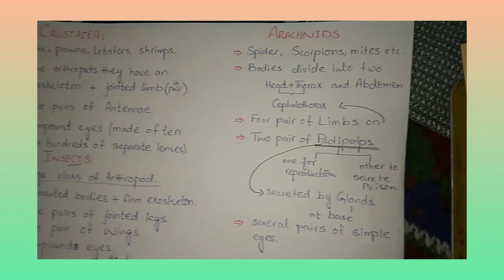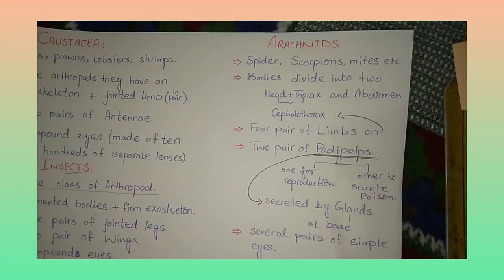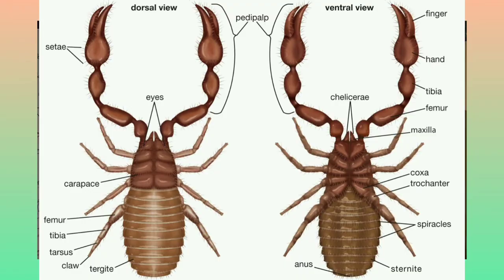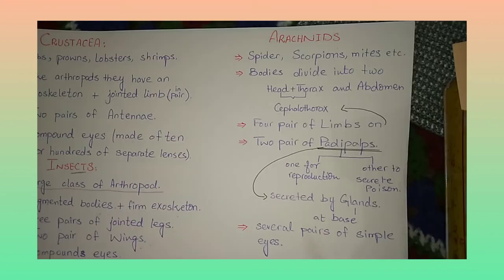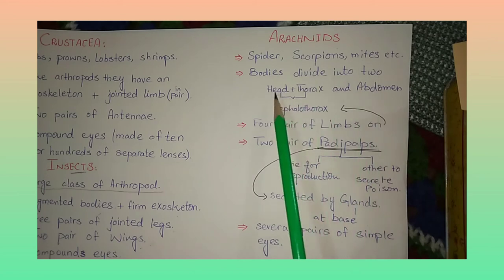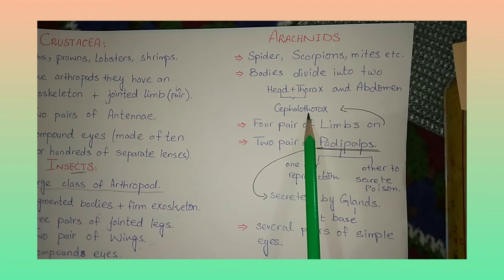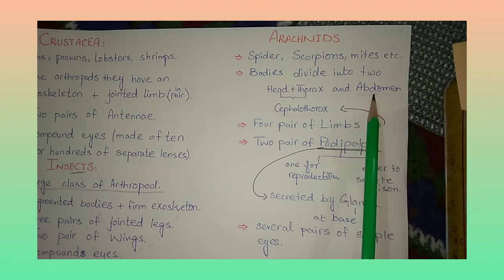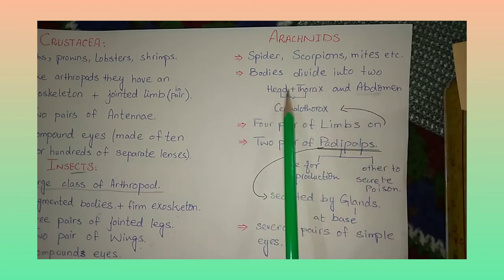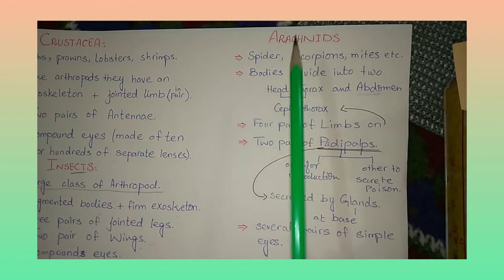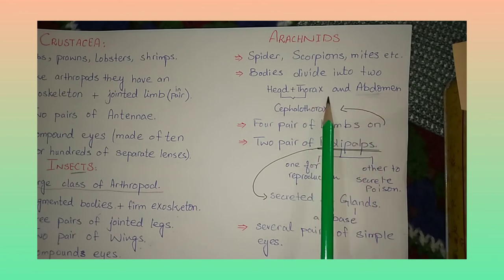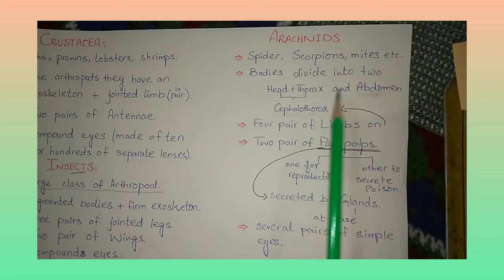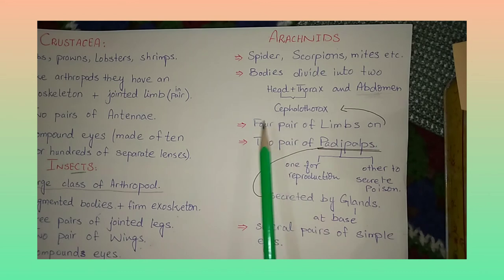The third class is arachnids. Arachnids include spiders, scorpions, mites, etc. One key difference from crustaceans and insects is that arachnid bodies are divided into two regions: the head and thorax combine to form the cephalothorax, and the second region is the abdomen. So arachnids comprise two regions rather than three.